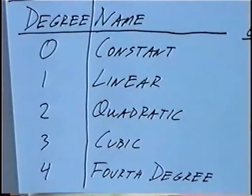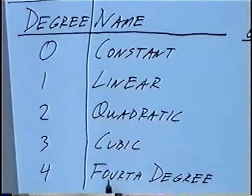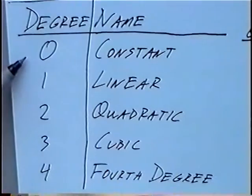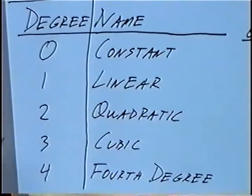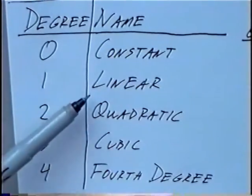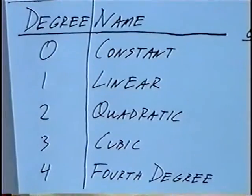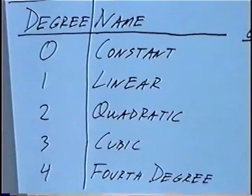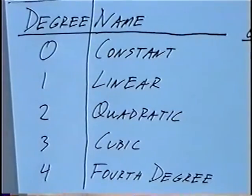For the first table, we can take the degree of a polynomial and find the name of that polynomial. A degree of zero means we have a single number — that is a constant. A degree of one is linear. Degree of two is quadratic. Degree of three is cubic. Degree of four is fourth degree. Anything above four would be the number and degree — for example, five would be fifth degree.